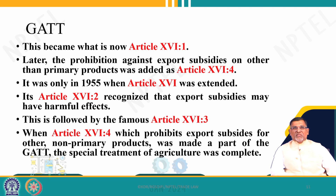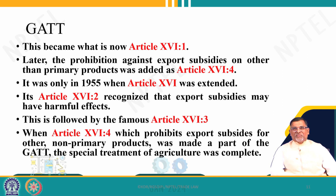Some of the provisions we can see include Article 16. There is a prohibition of export subsidies other than for primary products, which was added later on. Article 16 is one of the important provisions. It was extended and finally some pious language was used — that export subsidies may be harmful — because the agriculture negotiations are very tough. Nobody wants to touch upon the agriculture sector of their own country because it is a very sensitive issue at the domestic level.